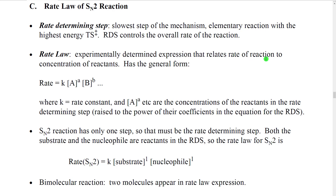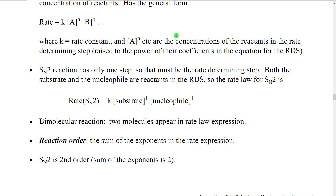When we talk about the reactants in the rate law, generally what we want to discuss is the reactants in the specific elementary reaction that is the rate-determining step. But in the SN2 reaction, we see that there is only one elementary reaction, so it's the specific reactants of the SN2 reaction which we are going to put into the rate law. Because the SN2 has only one step, that must be the rate-determining step. Both the substrate and the nucleophile are specifically reactants in that step, so we get a rate law that looks like this: the rate of the SN2 is the rate constant times the concentration of the substrate to the first power, times the concentration of the nucleophile to the first power.